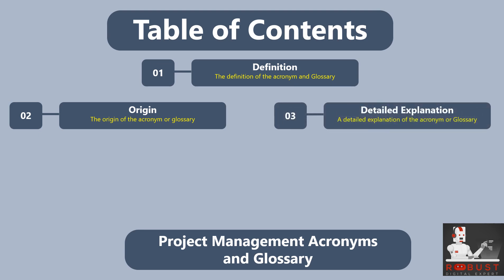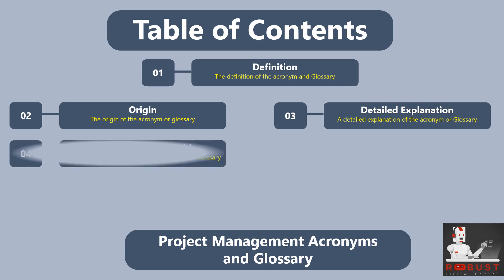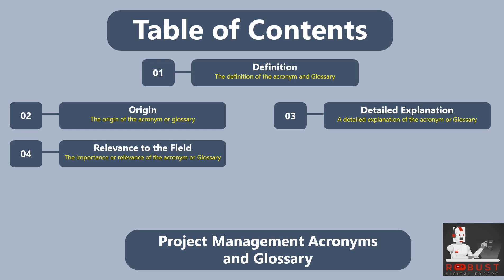Detailed Explanation: Here, we offer a thorough explanation of the acronym or glossary term, breaking it down into its constituent parts and explaining the meaning behind each element. We elaborate on any specific terminology or concepts associated with the term. Relevance to the Field: We explain why the acronym or glossary term is essential and relevant, discussing how it addresses a specific need, solves a common challenge, or represents a key concept within the discipline.